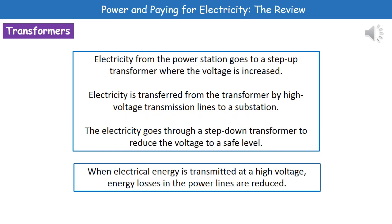When we looked at the national grid, we mentioned transformers. These are very important in changing the voltage. We have two types: a step-up transformer, which increases the voltage, and a step-down transformer, which reduces the voltage.